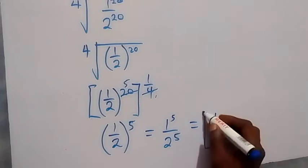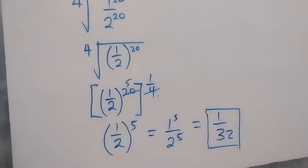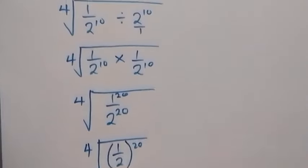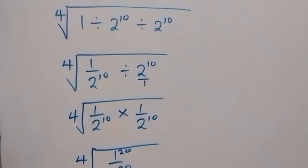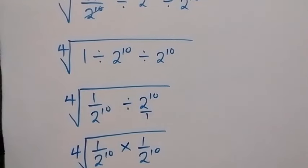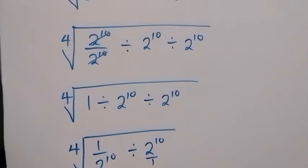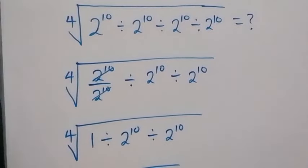So now we have 1 over 32 as the simplified form of this given problem. Thank you for watching — don't forget to subscribe for more exciting videos, turn on the notification bell, share this video, give a thumbs up, and put your comment in the comment section. See you next class, bye for now.